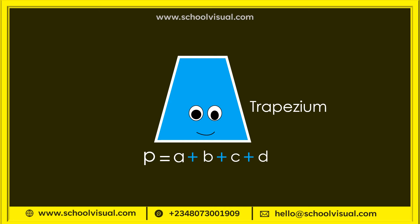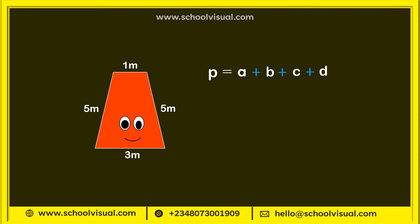This one is the easiest — it's just like finding a normal perimeter, just add each side. So let's try: P equals a, which is 1, plus B, which is 5, plus C, which is 3, plus...